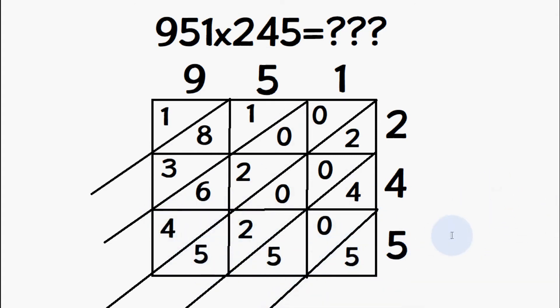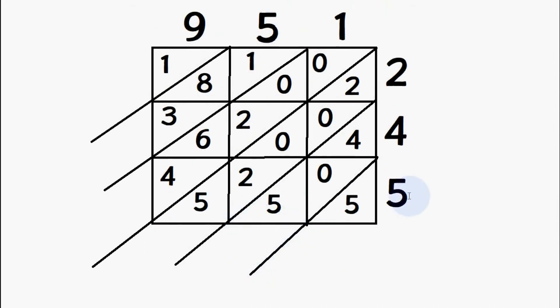Alright so we're nearly done now. What we're going to do is now add up all the numbers which are in each of these diagonal channels. So we have 5 here, 4 plus 0 plus 5 is 9, 2 plus 0 plus 0 plus 2 plus 5 is 9.